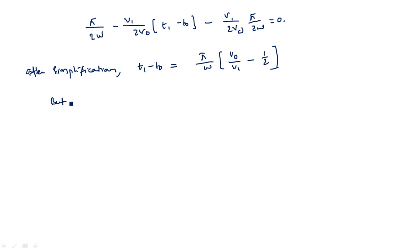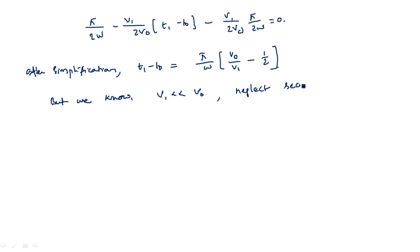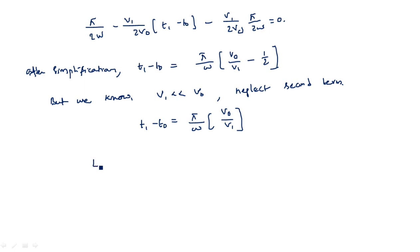We know that V1 is very much less compared to V0 — the amplitude of the RF signal is very small compared to the applied DC voltage. So we can neglect the second term. Therefore, t1 minus t0 equals (pi by omega) times (V0 by V1).